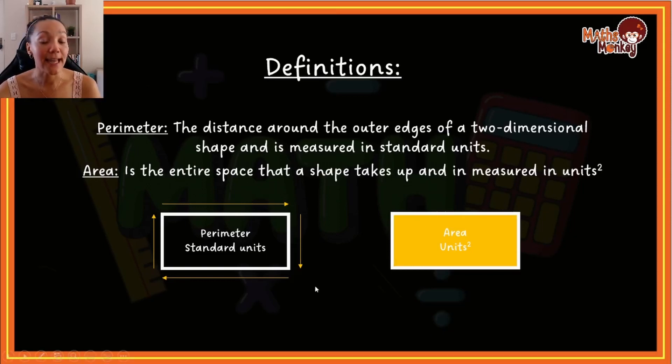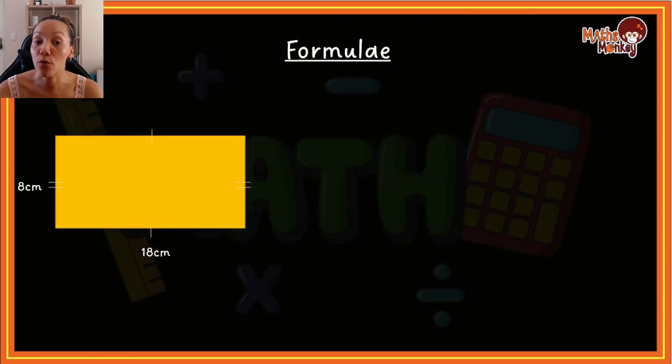So perimeter, outside lengths added together, the units stays the same as the question. The area calculates the entire space a shape takes up and the answer of that will be whatever units the sides and the dimensions are in to the power of two. This will be more clear when we actually do the example. So let's look at what the formula looks like.